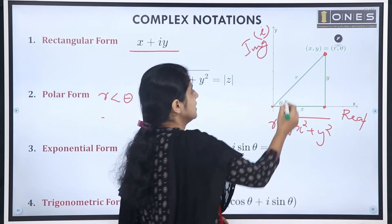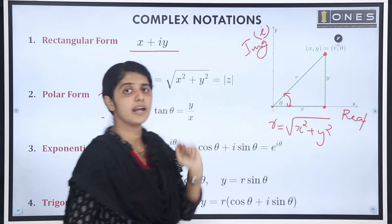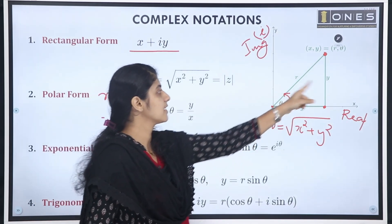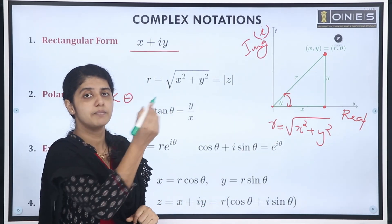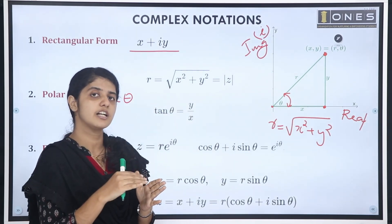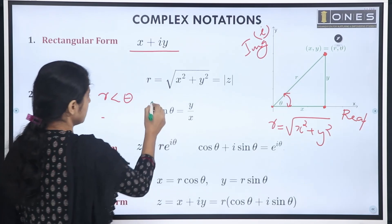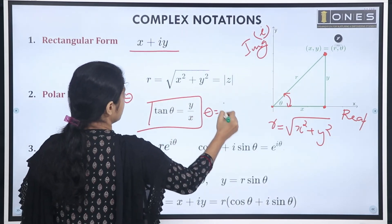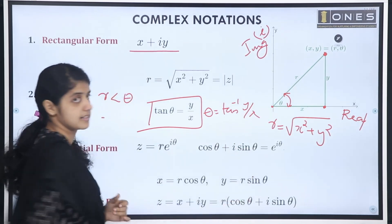For theta, considering the right triangle, tan theta equals y by x. Therefore, theta is equal to tan inverse of y by x. To convert from rectangular form directly to polar form: r equals root of x squared plus y squared, and theta equals tan inverse y by x.